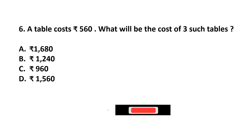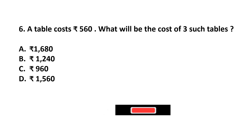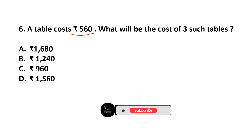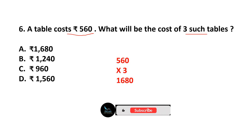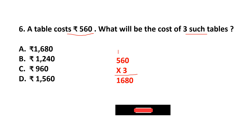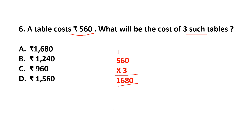Question 6: A table costs rupees 560. What will be the cost of three such tables? Cost of three tables is 560 multiplied by 3. Three zeros are zero, three sixes are eighteen carry one, three fives are fifteen plus one is sixteen. Our answer is 1680. Answer: option A.